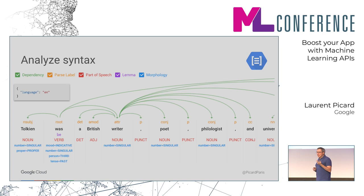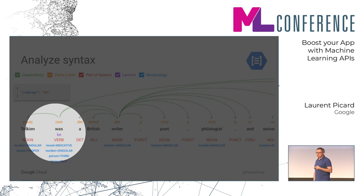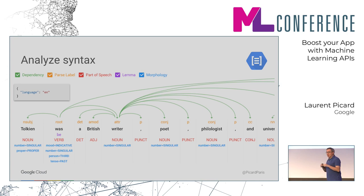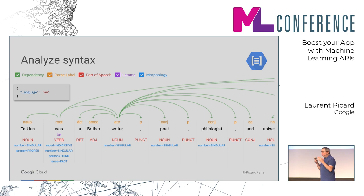One thing I like is that you can also get the lemma. For instance, the verb 'was' is in the past tense, and I can know that it's 'to be.' Likewise for nouns, I can get rid of genders — in French we have two genders, in German you have three — and focus on what you're looking for.